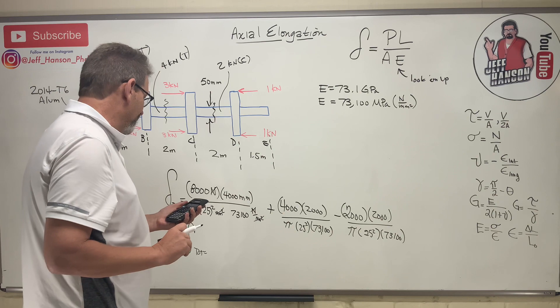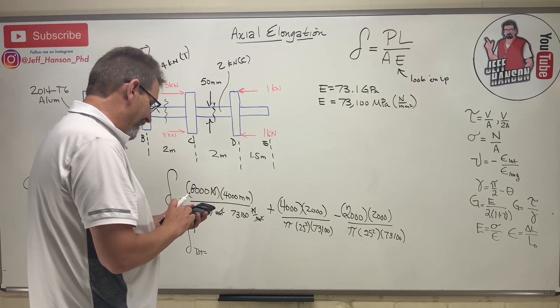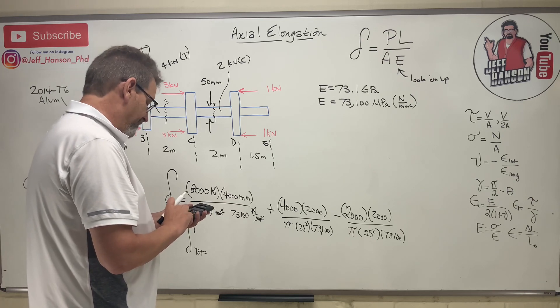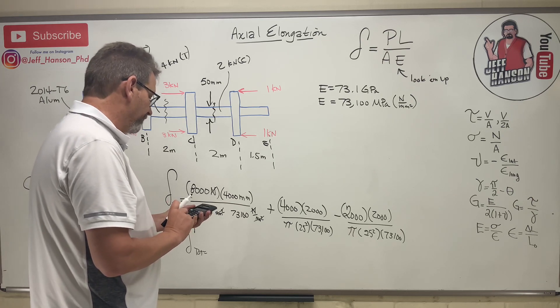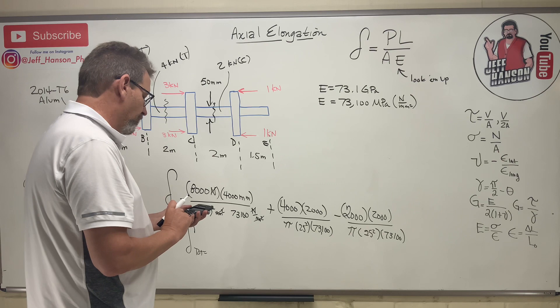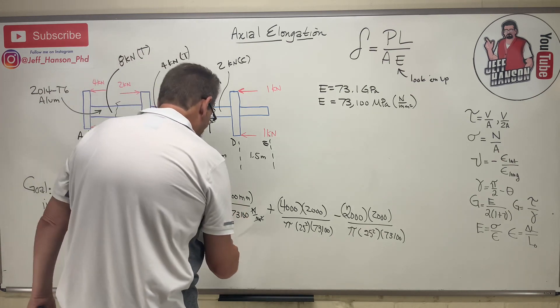And then that number I'm going to divide by pi, divided by 25 squared, and then divided by 73,100. That equals 0.2508.